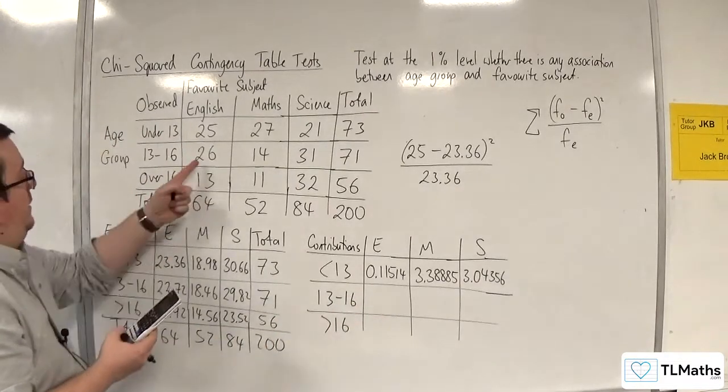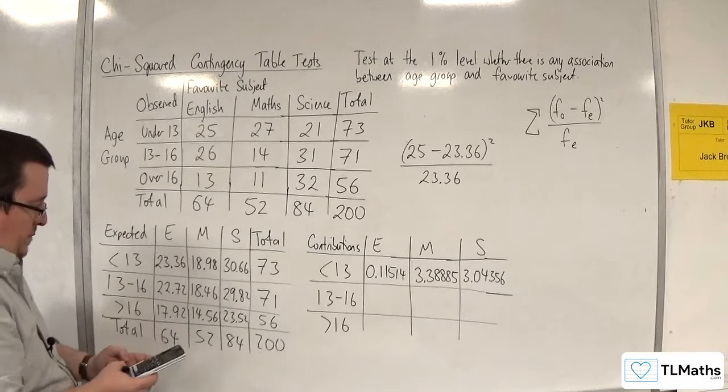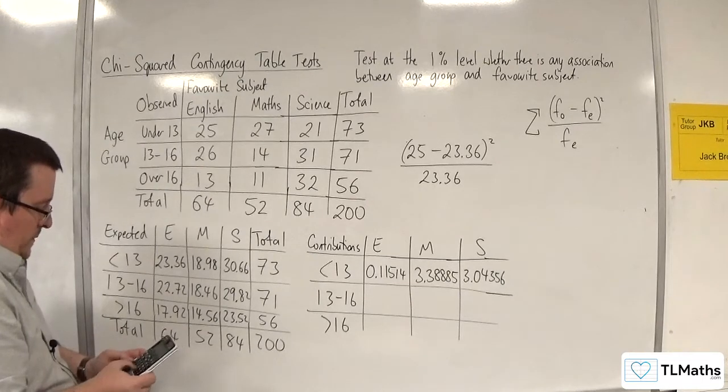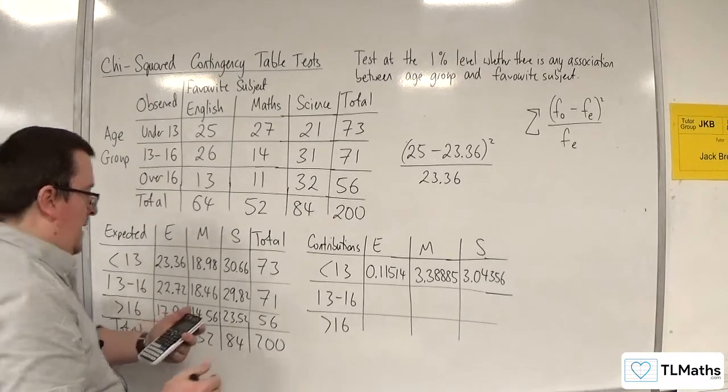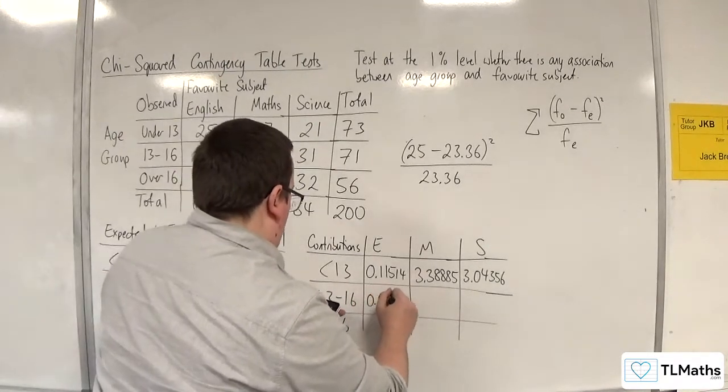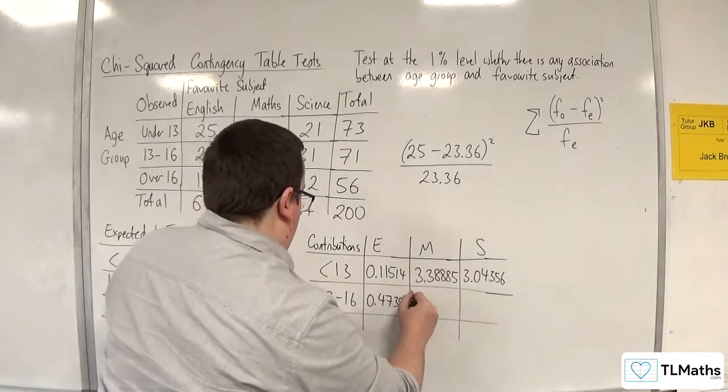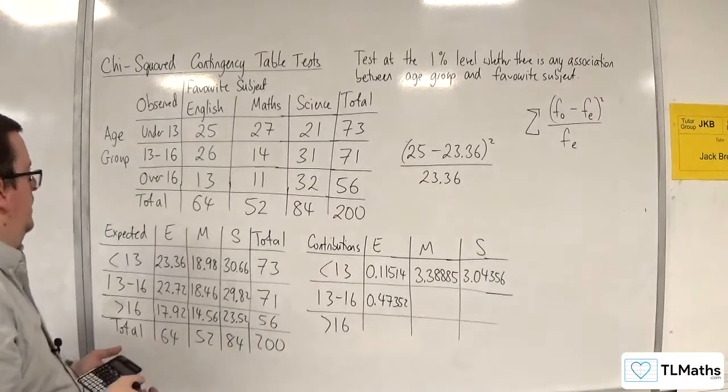Right. This one next. We're going to have 26 take away the 22.72, squared, divided by 22.72. And we get 0.47352.